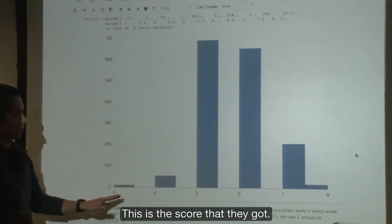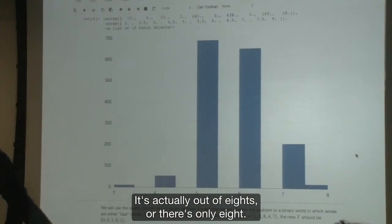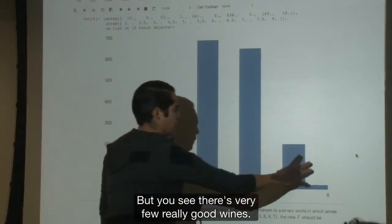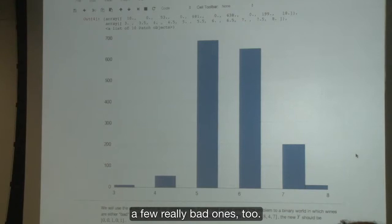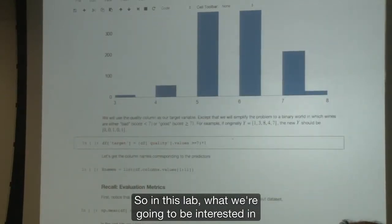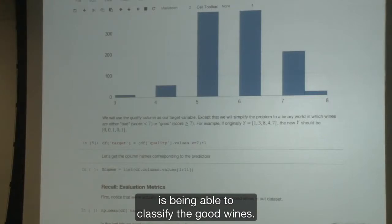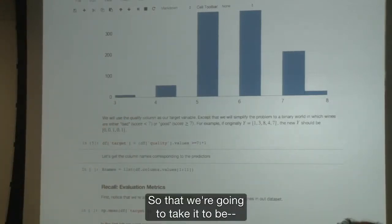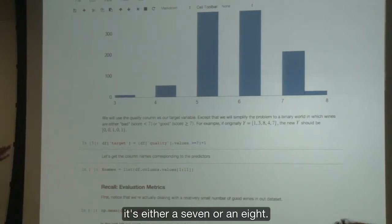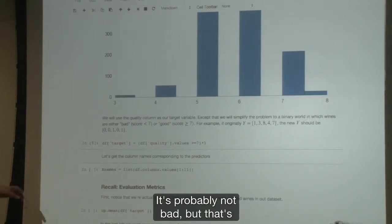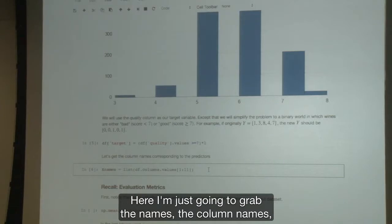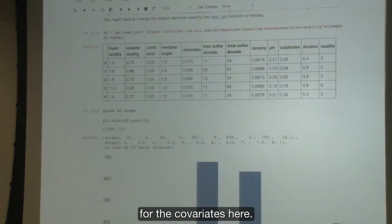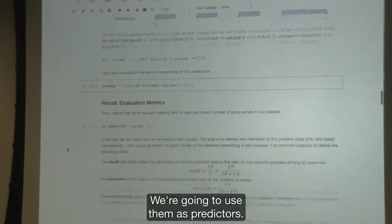There are physical measurements on each wine. So every row is a wine. And in the end, there's a quality score. These are all actual physical measurements on the wine. In this lab, what we're going to be interested in is being able to classify the good wines. We're going to take it to be, it's either a 7 or an 8, that means it's a good wine. Otherwise, it's a bad wine.